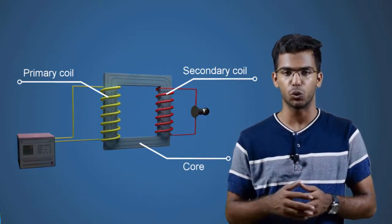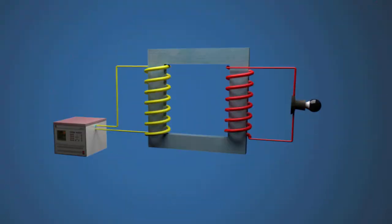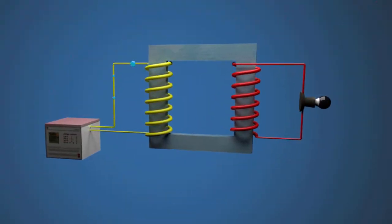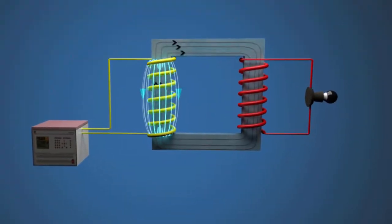As the AC current flows through the primary coil, a flux will be produced in that coil due to electromagnetism. That is, a current carrying conductor produces a magnetic field around it.